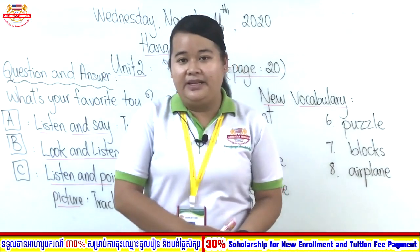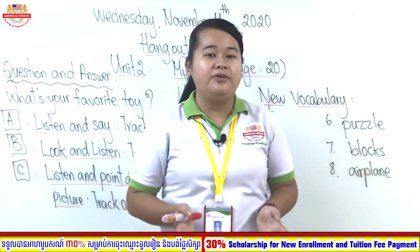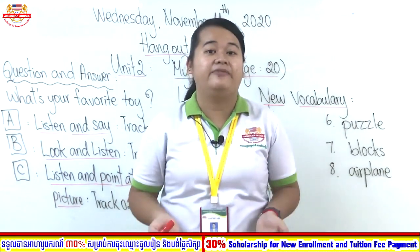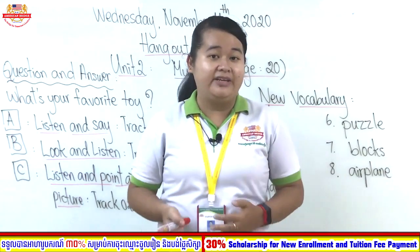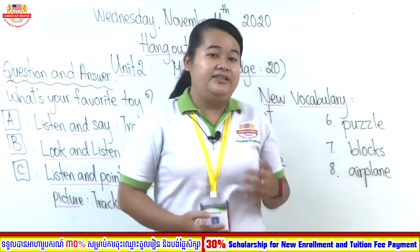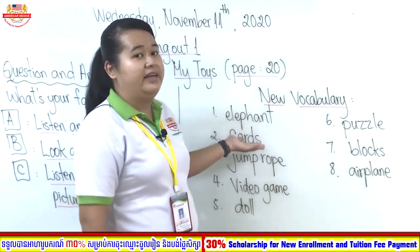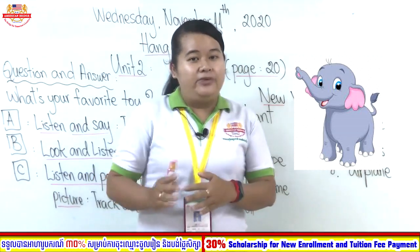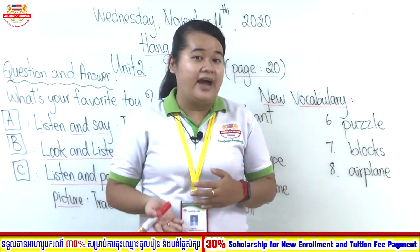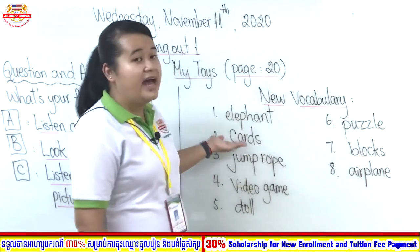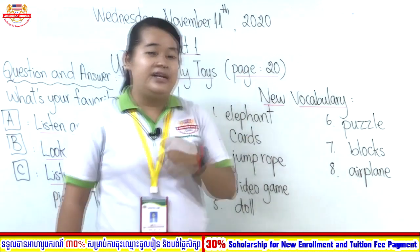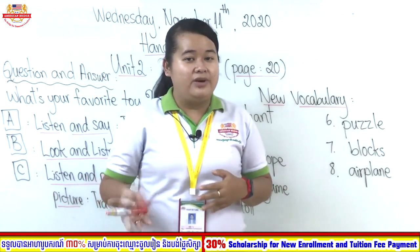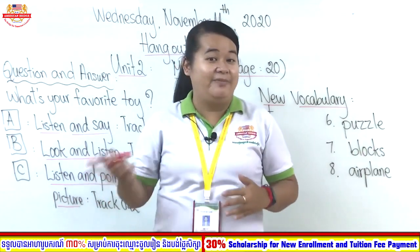Welcome back. Before we move to our exercises, teacher wants you to read our new vocabulary words and will explain them one by one. The first word is elephant. Let me show you the picture — this one is an elephant, a toy you may have liked when you were young. Number two is cards. Let me show you the picture — cards are something you may have played with friends or neighbors.